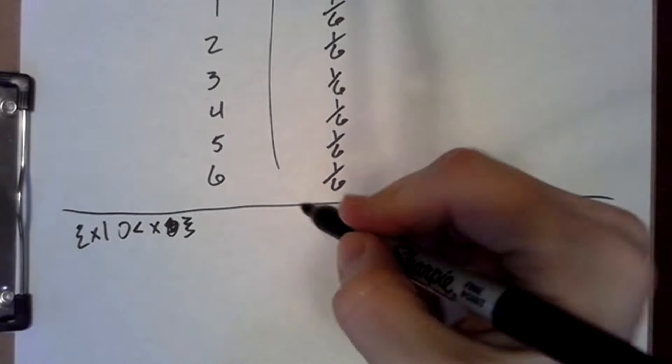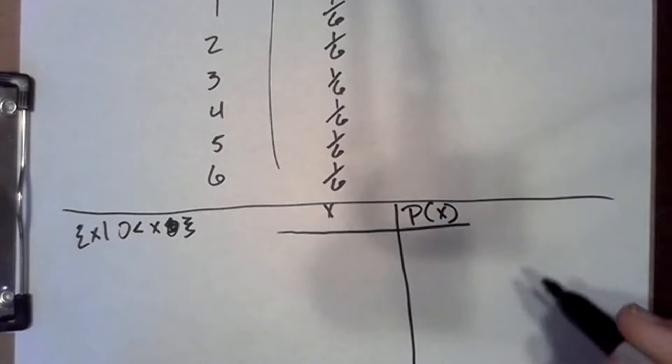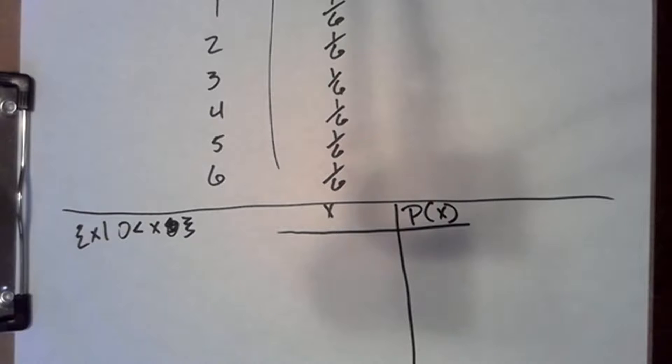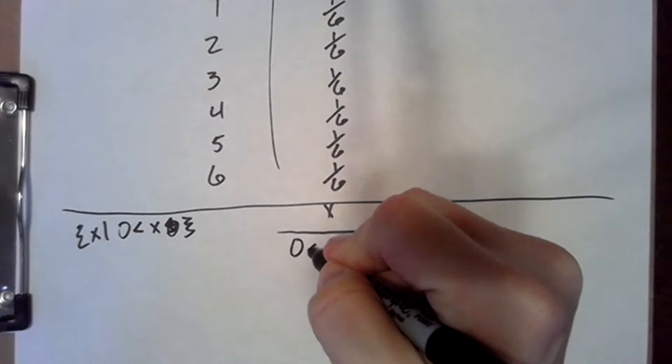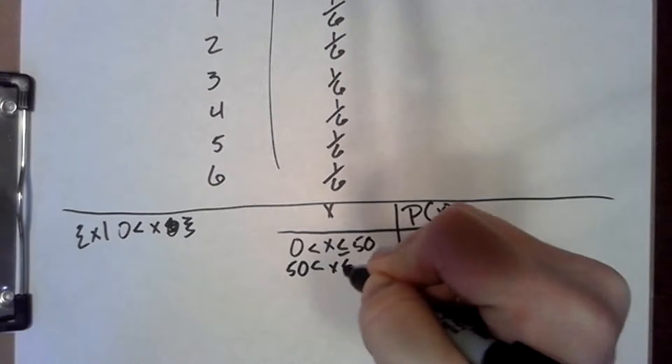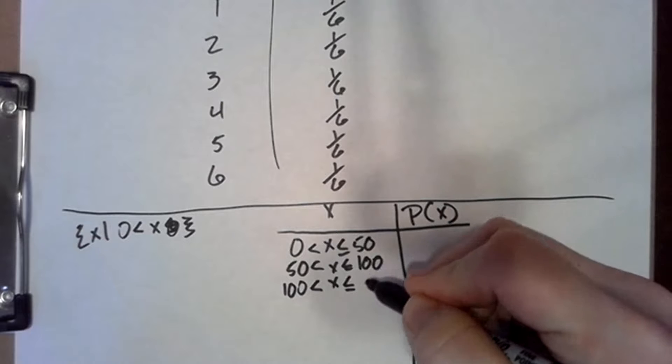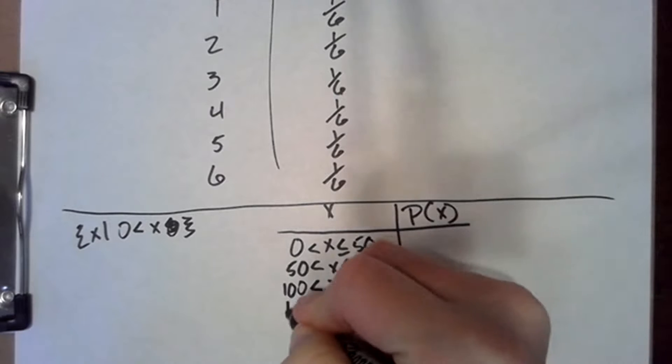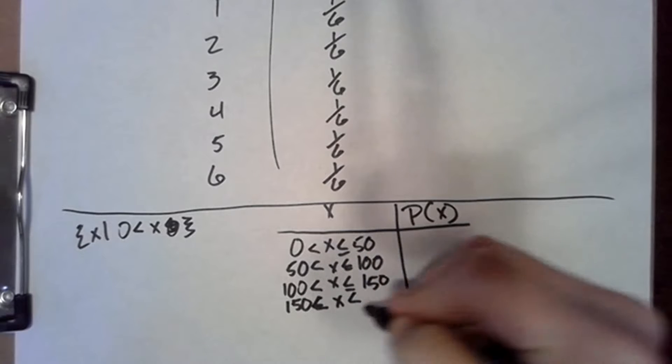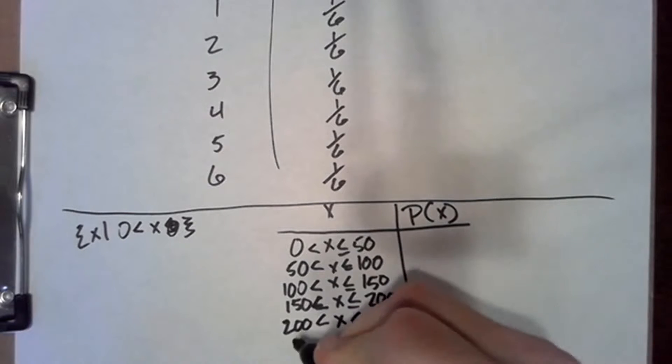Now, as for our probability distribution, we're going to have again X and P of X. And we're going to have six entries on the left here. Zero is less than X is less than or equal to 50. 50 less than X less than or equal to 100. 100 less than X less than or equal to 200, to 150 rather. 150 to 200, 200 to 250. And finally, X is greater than 250.